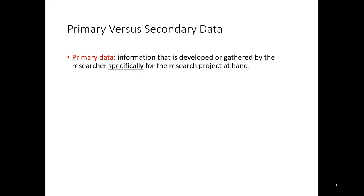First, we should distinguish between what's primary data and secondary data. Simply put, primary data is information that you've generated using your own research efforts. Importantly, this is data that was generated specifically to solve a particular research project or research problem.